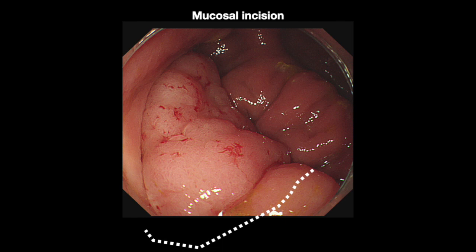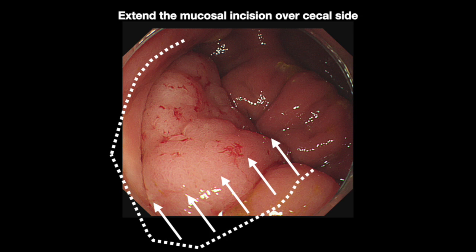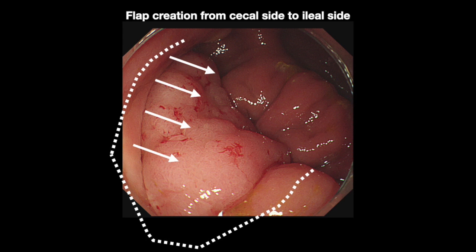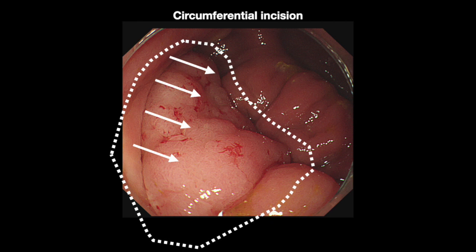Then we extend the mucosal incision over the cecal side. Flap creation can be done from the cecal side to the ileocecal side. Finally, we perform whole circumferential incision and complete the dissection.